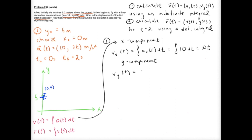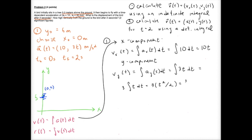Now we'll do the y component which is a slightly trickier integral. The thing inside the integral is the y component of our acceleration — there's no need to find the magnitude, we are completely separating x and y components until the very end. This integral is the integral of 3t dt. We can pull the 3 outside: 3 times the integral of t dt, which equals t squared divided by 2. So our y component of velocity is 3/2 t². We are done with step one.